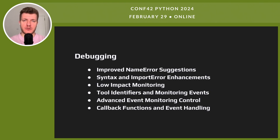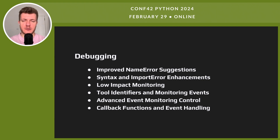Debugging in Python 3.12 got a big upgrade. NameError suggestions are sharper now — they understand you better. Syntax and import error messages are clearer and more helpful. There is also a new API for monitoring CPython execution events. These changes make debugging less of a headache and more of a breeze.